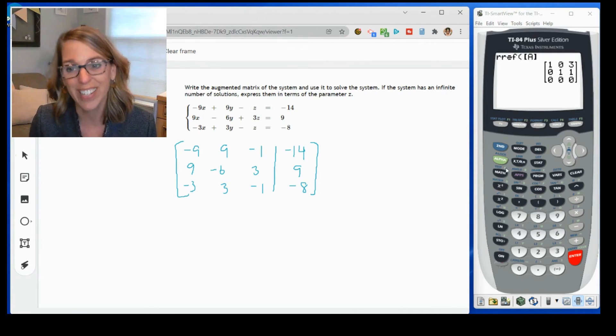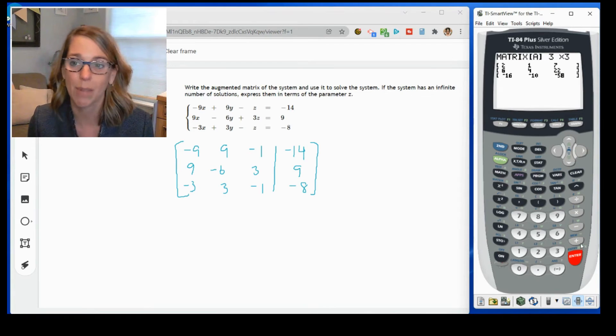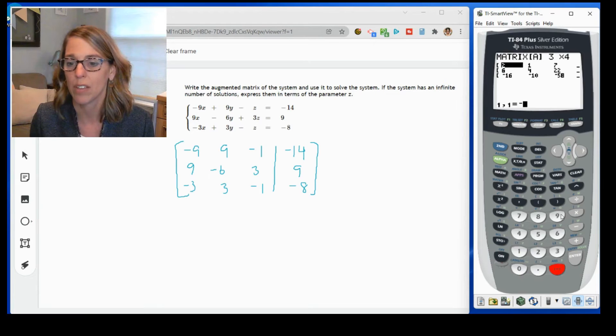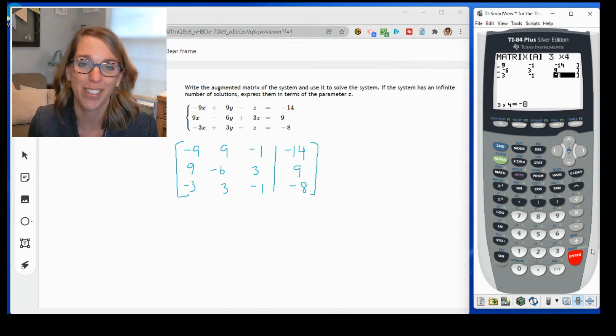Okay, let's go ahead and put this one into the calculator. So I'm going to go second matrix. I want to grab a new matrix, but I'm going to go ahead and enter it into matrix A again. I'm just going to type over what I had, but this time I have three rows and four columns. So let's change it to a 3 by 4. And we're going to type in our value. So I've got negative 9, 9, negative 1, and negative 14. 9, negative 6, 3, and 9. And then negative 3, 3. Luckily, this is the hardest part. Negative 1, and then negative 8.